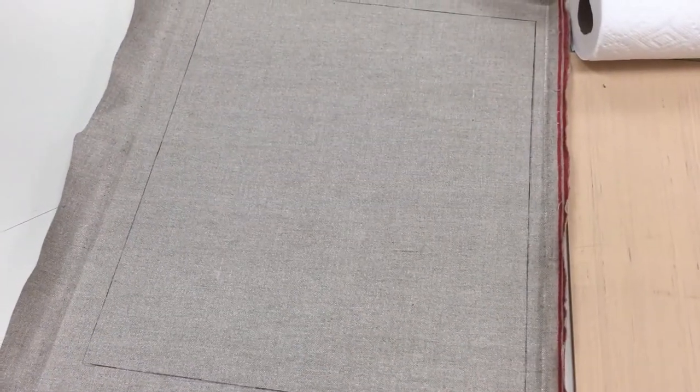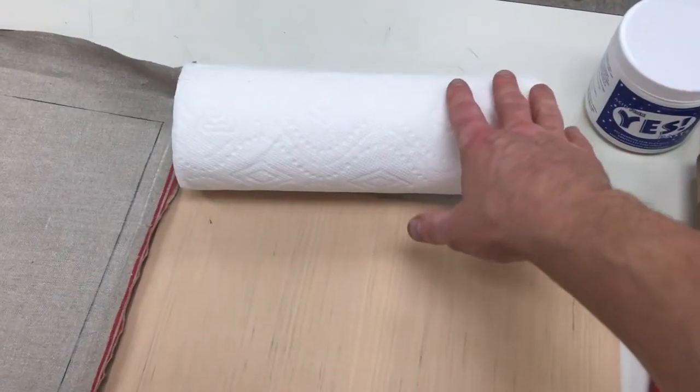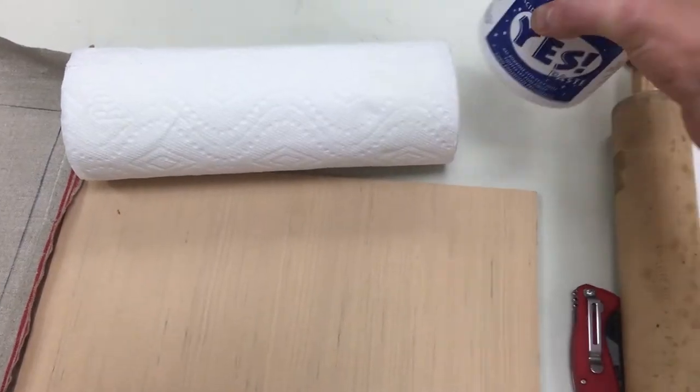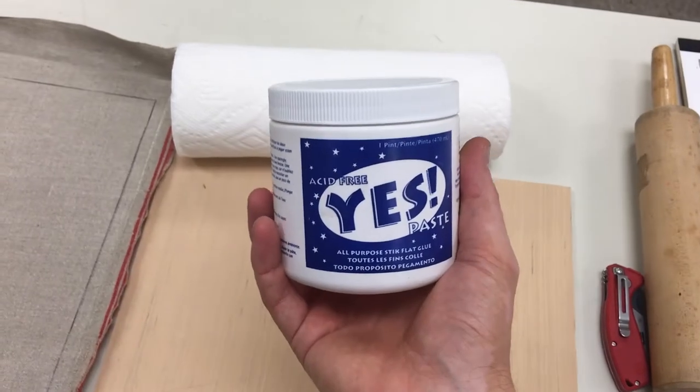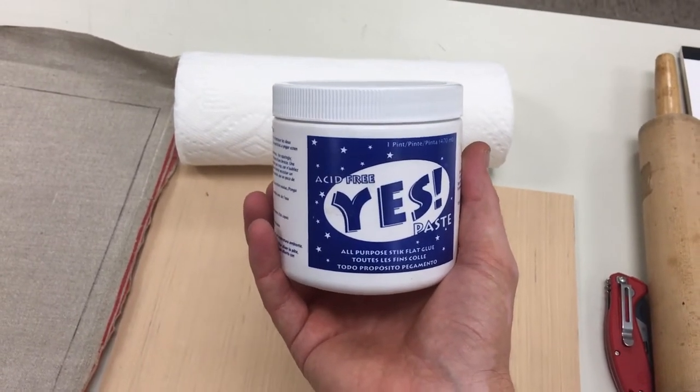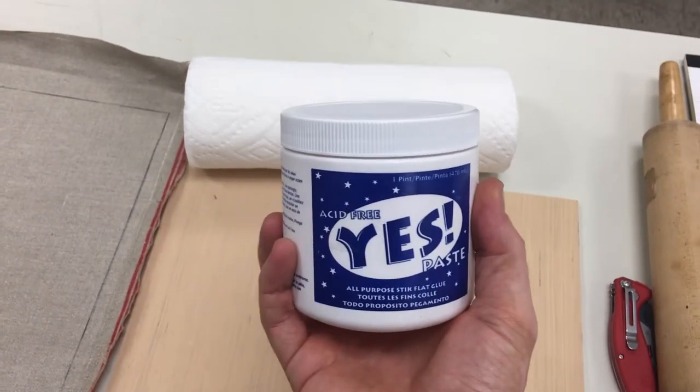Here are some of the supplies that we'll need so obviously you'll need your canvas whatever you want to mount to the board, the board that you will be mounting the canvas to. Paper towels are always a good idea. This is the secret ingredient. This is what really helps the process go well. This is Yes brand acid-free paste.